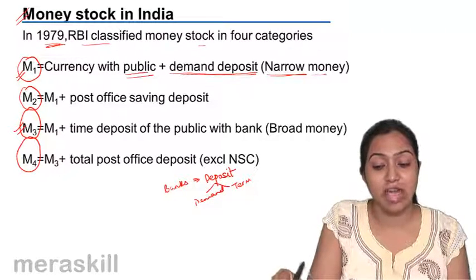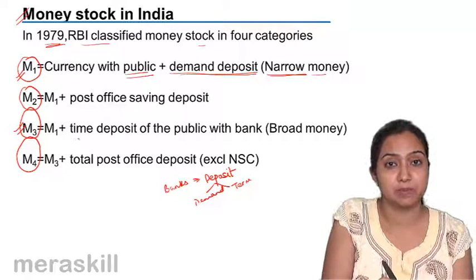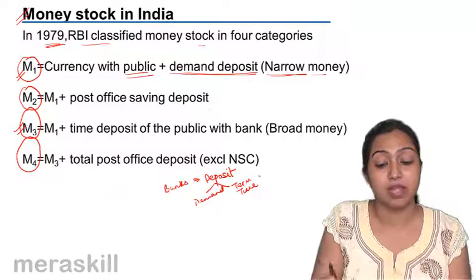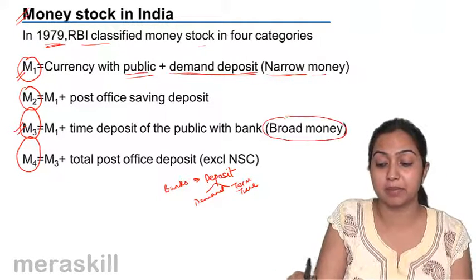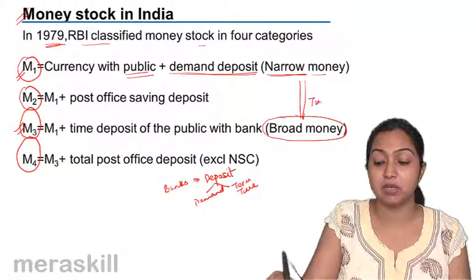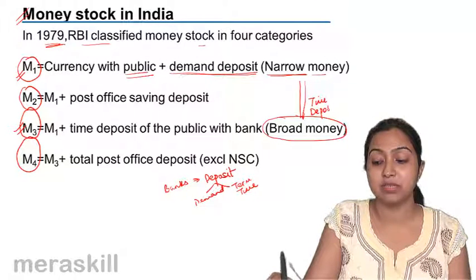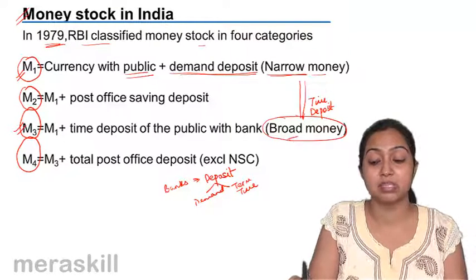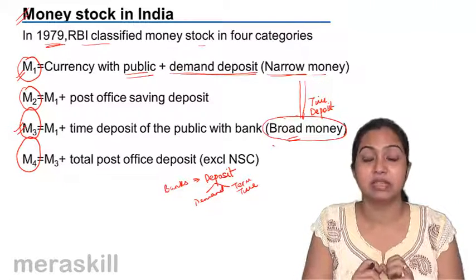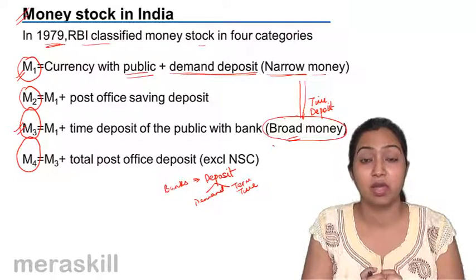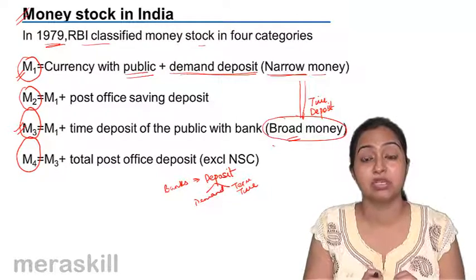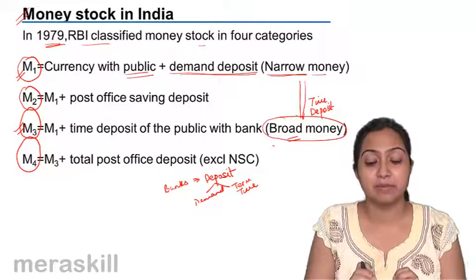When in narrow money you add time deposits along with demand deposits, it becomes broad money. The difference between narrow money and broad money is the time deposit. When we consider time deposits as well, narrow money becomes broad money — that is, currency plus demand deposits plus time deposits that mature in a fixed period of time.